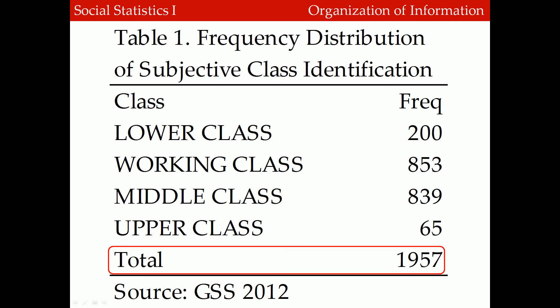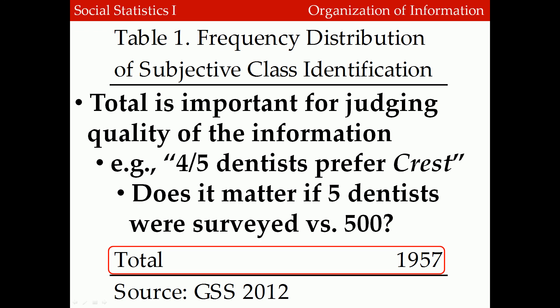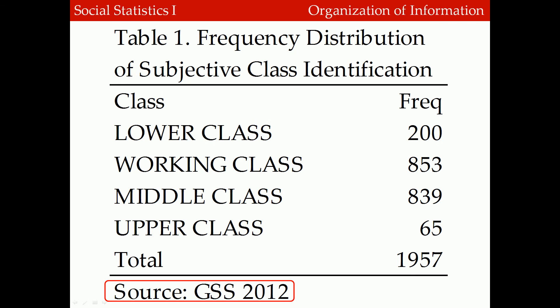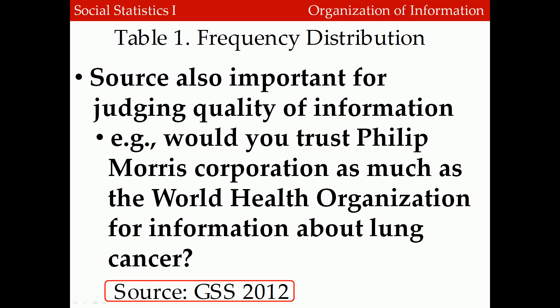Why do we include a total number of cases? It's an important piece of information to judge the quality of the information being presented. For example, you may have heard things like '4 out of 5 dentists prefer Crest.' Does it matter if we ask 5 dentists or 500 dentists? Of course it does. Indicating the number of cases gives the audience a better sense of the quality of the information. Tables also include a source — here the source is the General Social Survey, 2012. This is another important piece of information to judge data quality. Would you trust Philip Morris as much as the World Health Organization for information about lung cancer? Probably not. People want to know where data are coming from in order to judge quality.